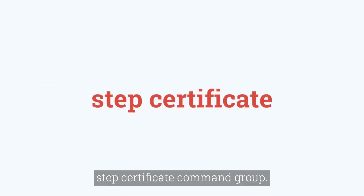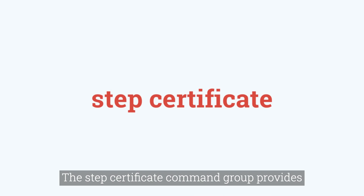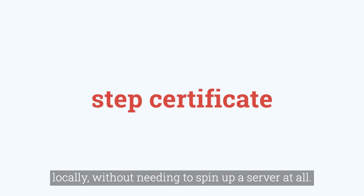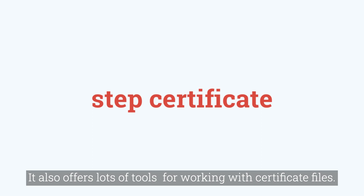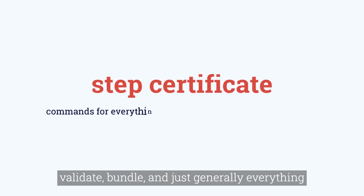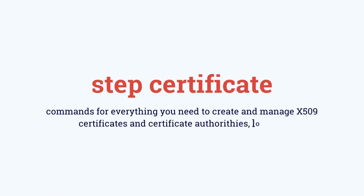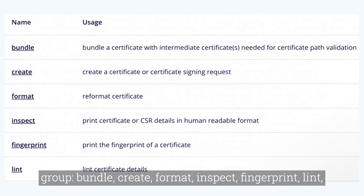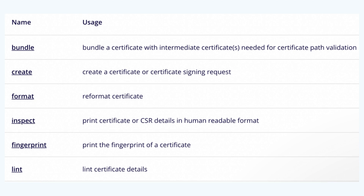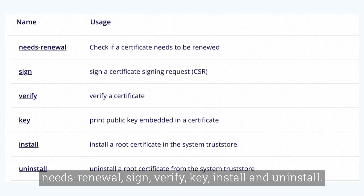First, we have the step certificate command group. It provides commands that enable you to run a certificate authority locally without needing to spin up a server at all. It also offers lots of tools for working with certificate files, featuring commands to create, revoke, validate, bundle, and generally everything you need to manage and set up certificates. The subcommands include: bundle, create, format, inspect, fingerprint, lint, needs-renewal, sign, verify, key, install, and uninstall.